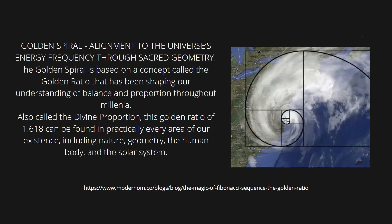The golden spiral is based on a concept called the golden ratio that has been shaping our understanding of balance and proportion throughout the millennia. Also called the divine proportion, the golden ratio of 1.618 can be found in practically every area of our existence, including nature, geometry, the human body, and the solar system.